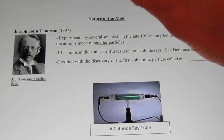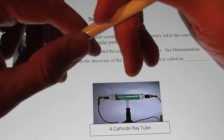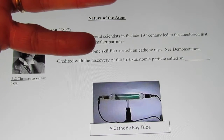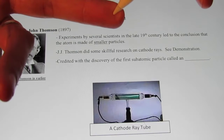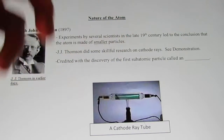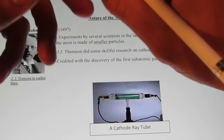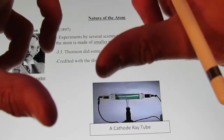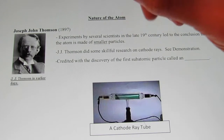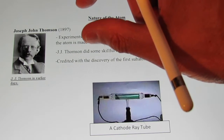We're back and we're continuing our discussion related to the atomic nature of matter. We had talked about the very early years with Democritus, Aristotle, Anton Lavoisier, and John Dalton. You should be familiar with those four names. The first model of the atom became known as the billiard ball model of the atom, proposed by John Dalton. Remember, nothing could get smaller than the atom itself.